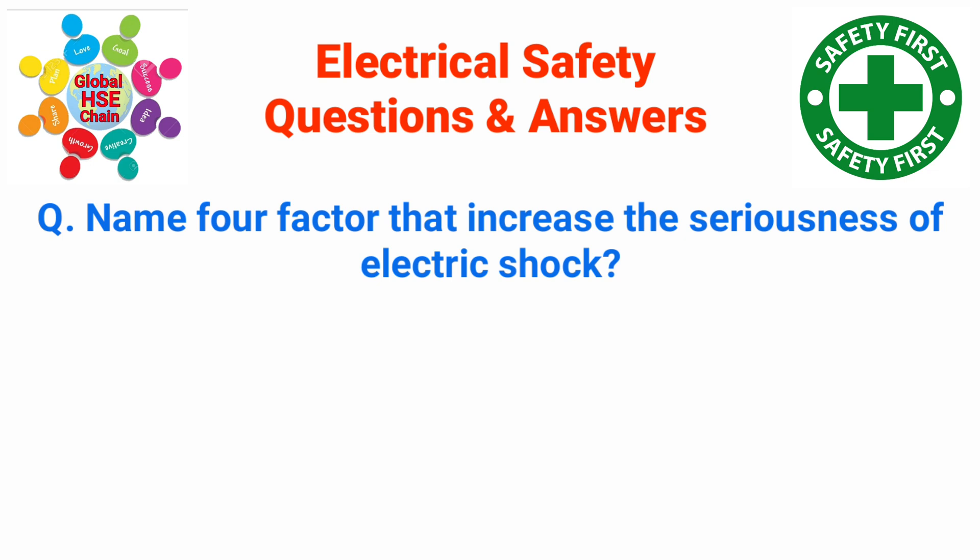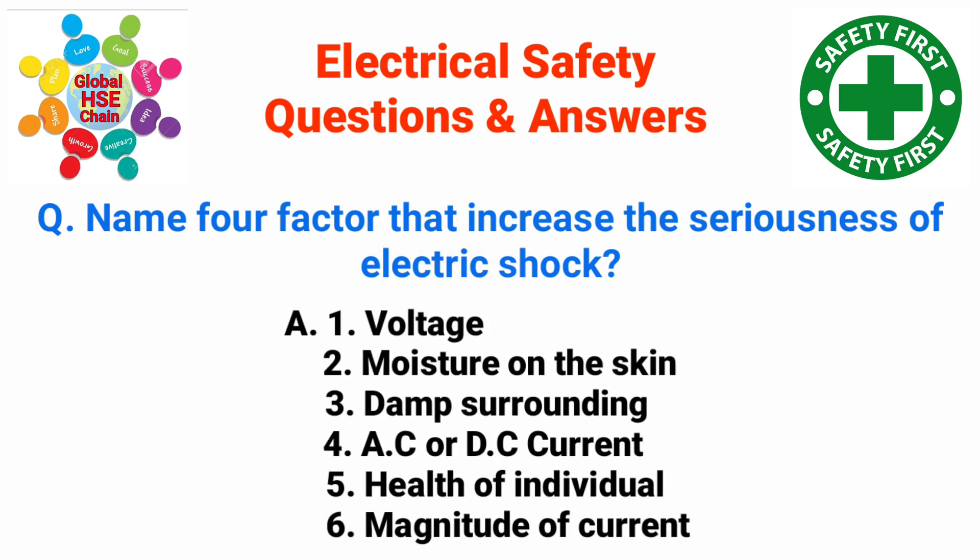Question: Name four factors that increase the seriousness of electric shock. The answer is: number one, voltage. Number two, moisture on the skin. Number three, damp surroundings. Number four, AC or DC current. Number five, health of the individual. Number six, magnitude of current.